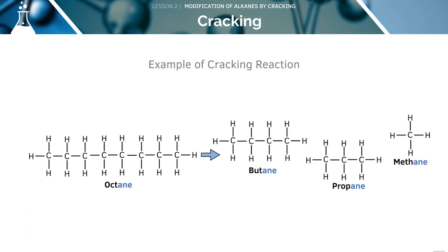Let's look at this example of a cracking reaction. We can take octane, which is a fairly large alkane, and break it down into three different alkanes, namely butane, propane and methane. These are all short chain alkanes, which are much more useful.